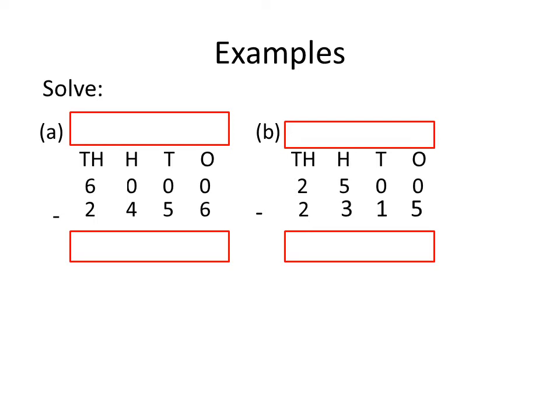In the first example, you have been given two numbers of four digits. The first is 6000 and the second is 2456. Now, first we subtract the digit at the 1's place. Here, the digits at the 1's place are 0 and 6. But 6 cannot be subtracted from 0.